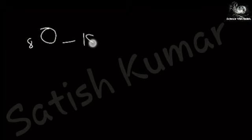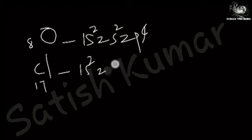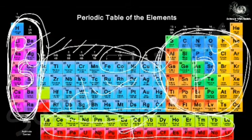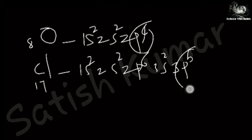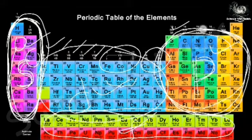For p-block elements, take oxygen (atomic number 8): 1s², 2s², 2p⁴ — the last electron is in a p orbital. Chlorine (atomic number 17): 1s², 2s², 2p⁶, 3s², 3p⁵ — again the last electron is in a p orbital. For all elements in groups 3A to 7A, the last electron compulsorily enters a p orbital, so these are called p-block elements.